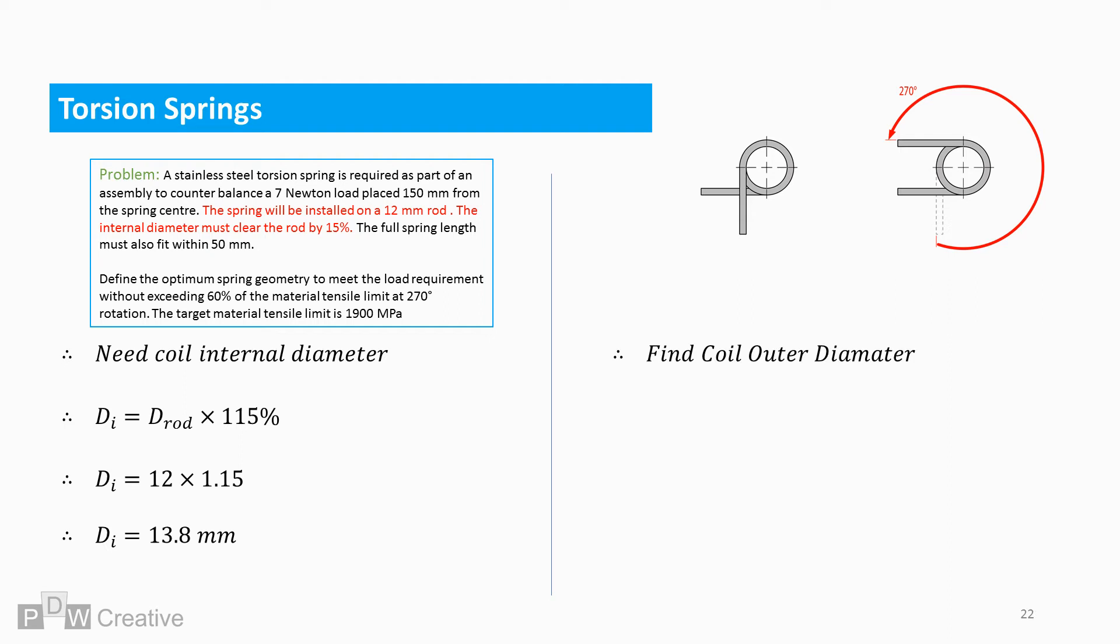The coil outer diameter is straightforward. Internal diameter plus 2 times wire diameter gives us 18 mm. From this, we can work out the mean diameter. This is what we actually needed for the spring index equation.